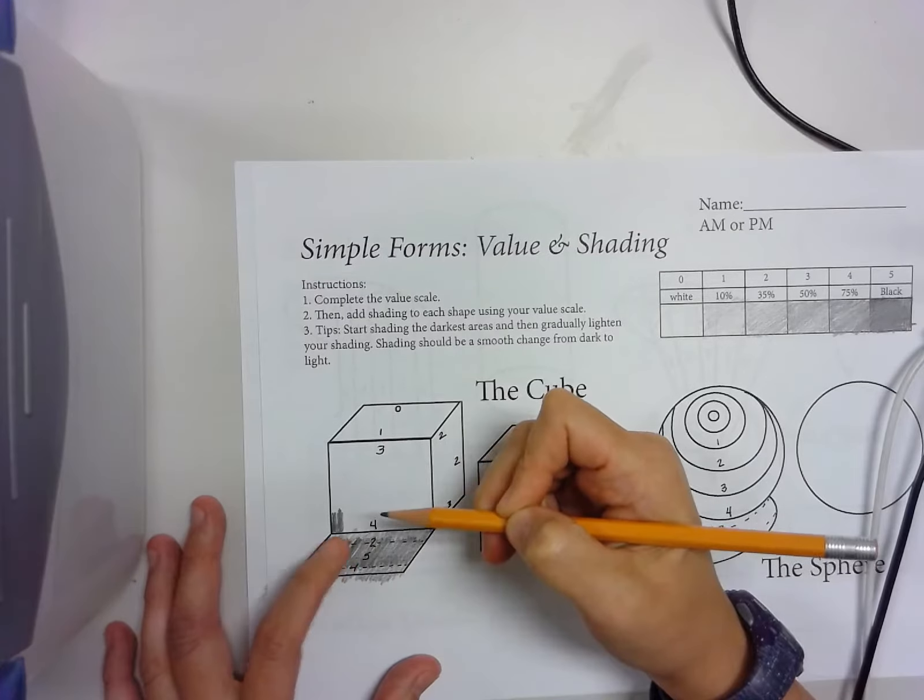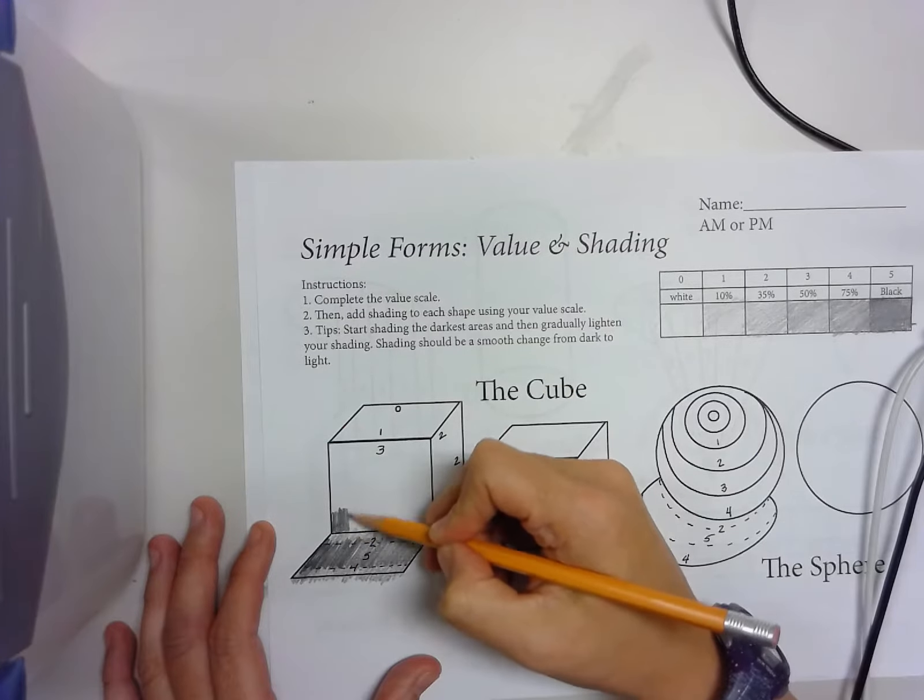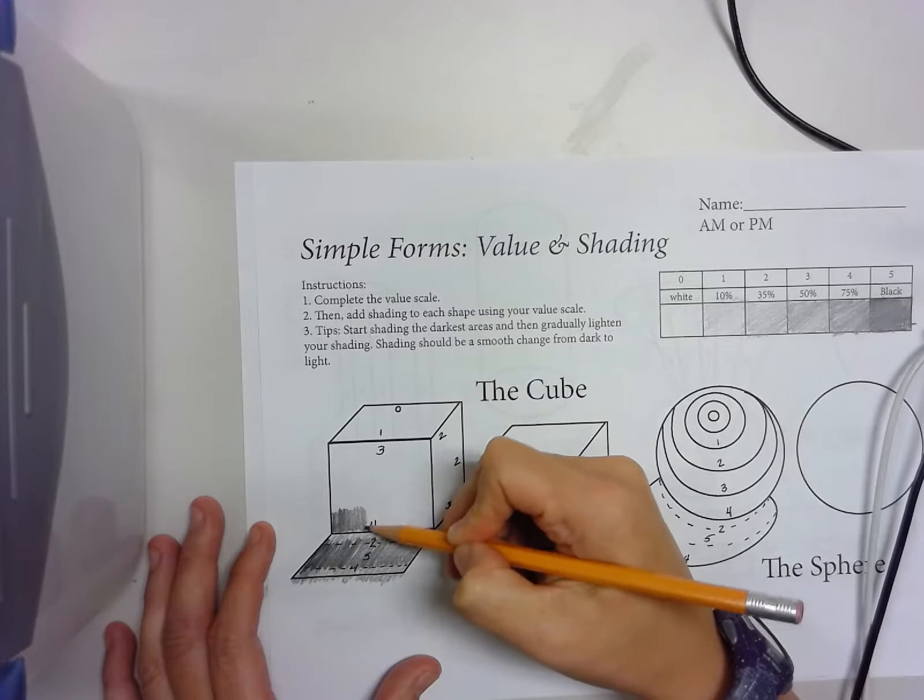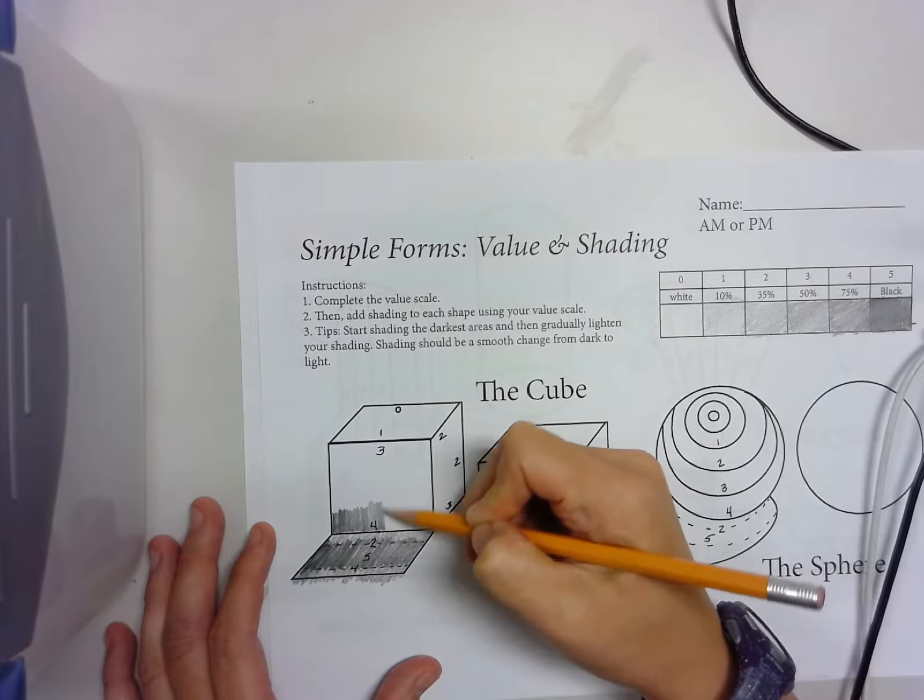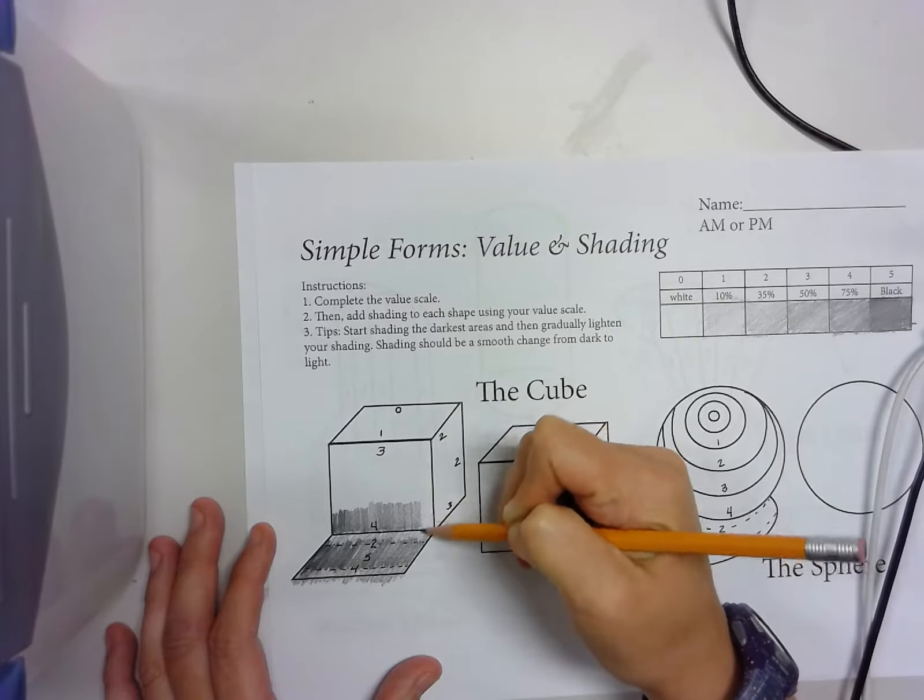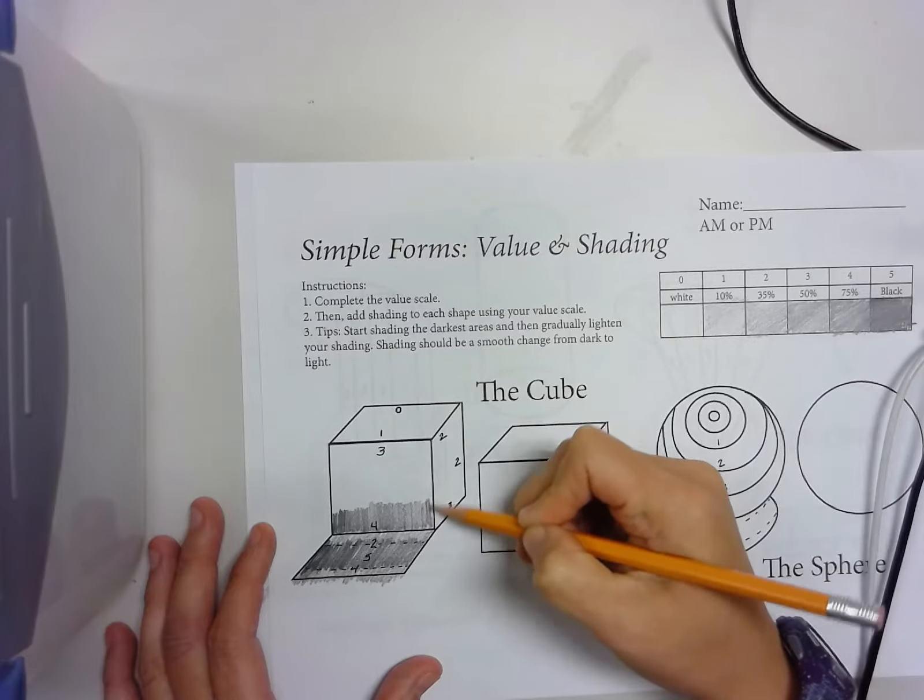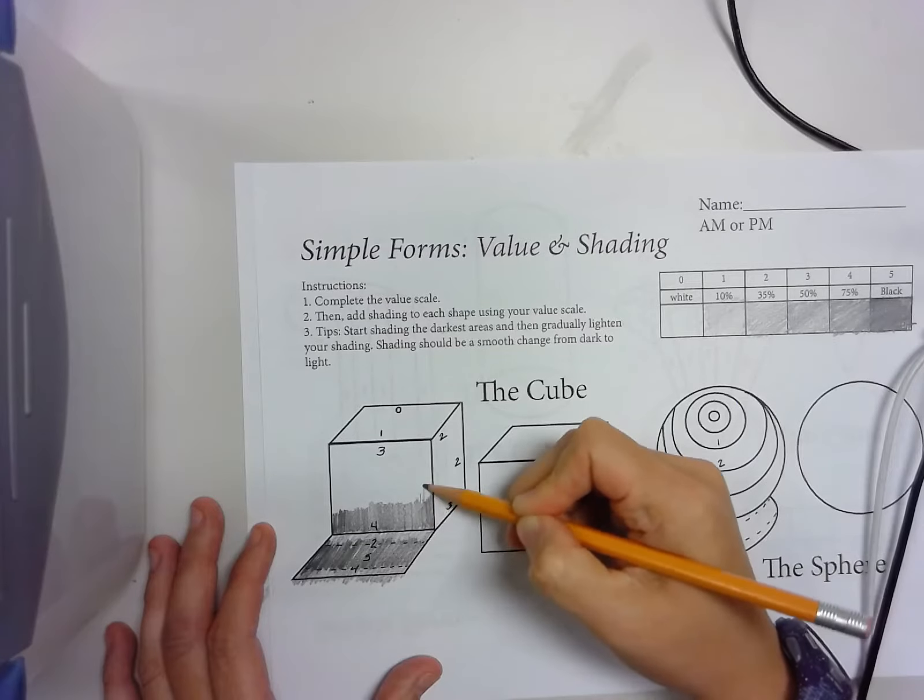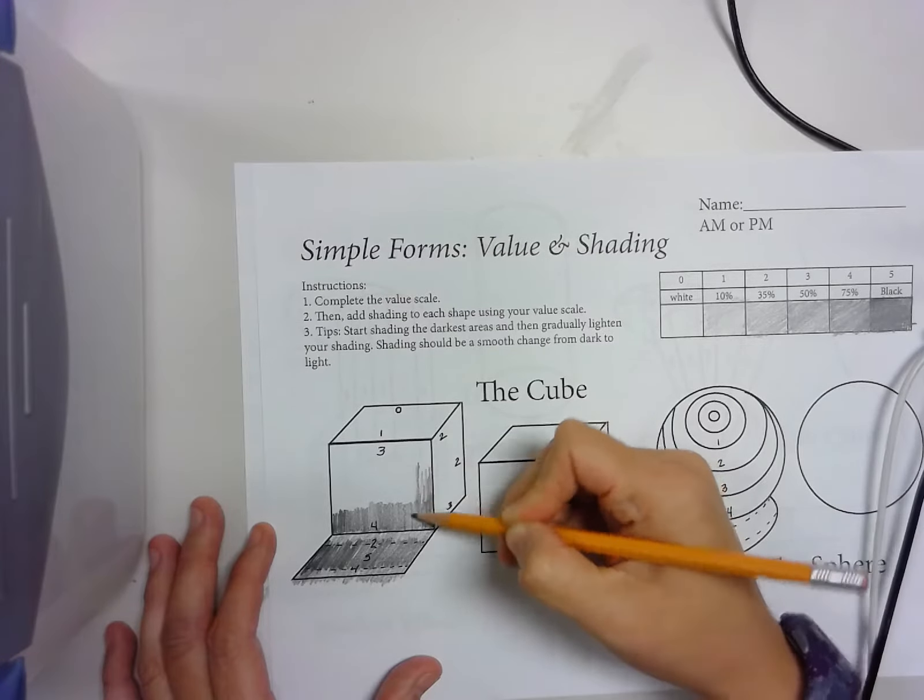The reason why it gets 2 right here, there's something called reflected light. A lot of times when an object has shadow, you may notice there's almost like a little bit of a light spot behind the shadow. That's where light sometimes reaches in, and it's just called reflected light.